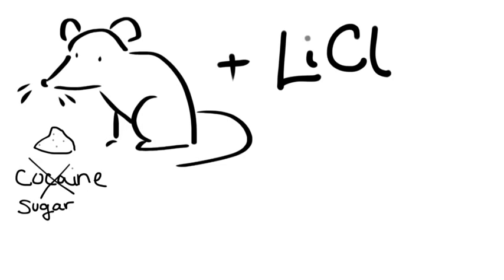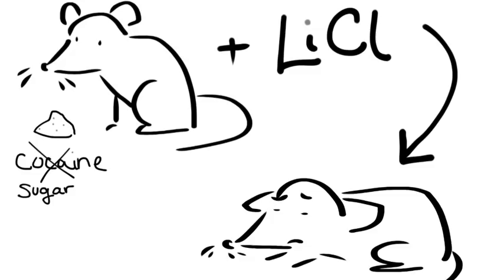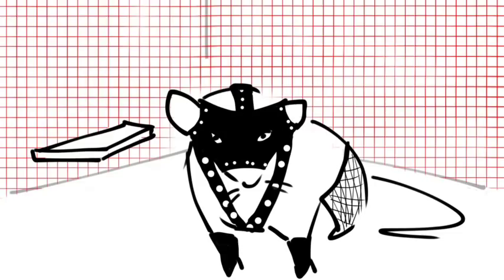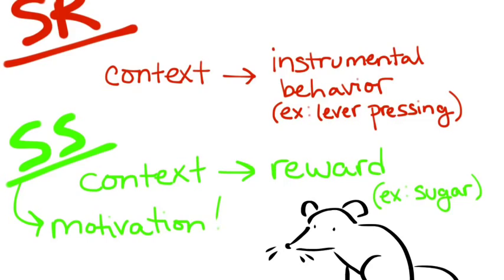If we give rat sugar, then make them sick, theoretically they shouldn't want the sugar anymore. If they are in charge of whether or not they get the sugar, for instance by lever pressing, why would they continue to perform a behavior that will give them something they don't want? What can account for this? A weird obsession with lever pressing? Unbridled masochism? Or could it be that there's a reflexive component to behavior?